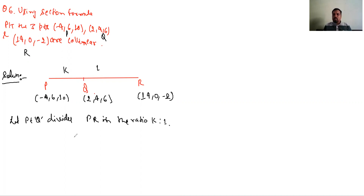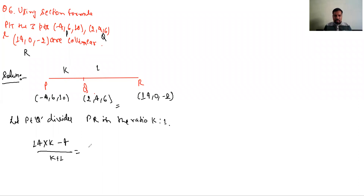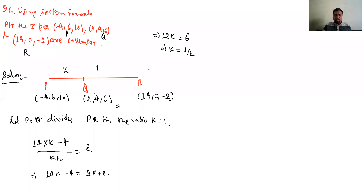K:1 ke ratio mein usko divide kar raha hai. Agar X, Y coordinate aur Z coordinate — agar teeno jagah K ki value same aa rahi hai, to matlab points collinear ho gaye. X coordinate ke liye: (14K - 4) / (K+1) = 2, to 14K - 4 = 2K + 2, 12K = 6, K = 1/2.